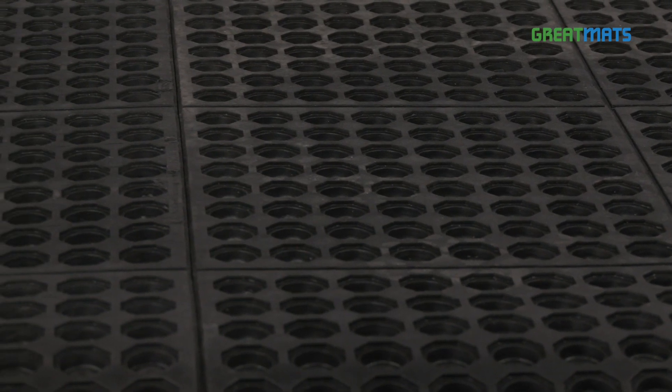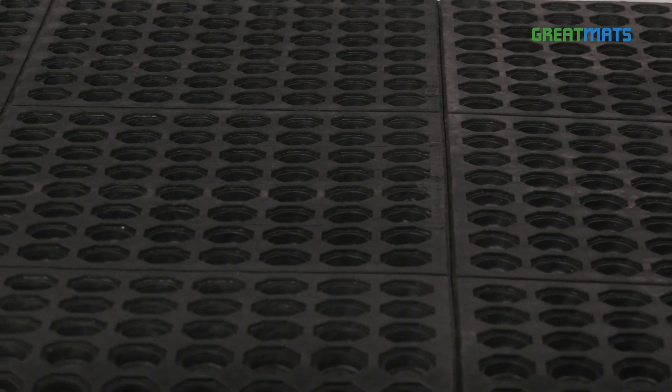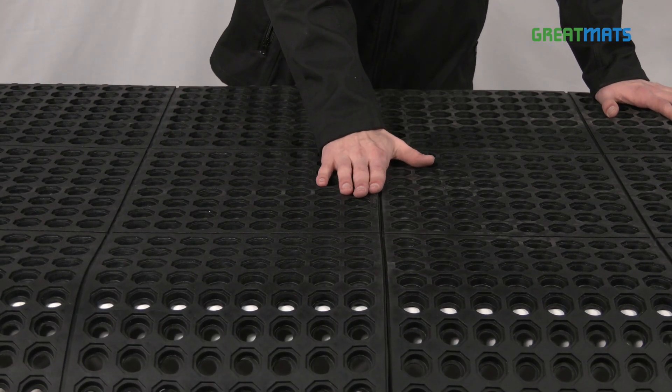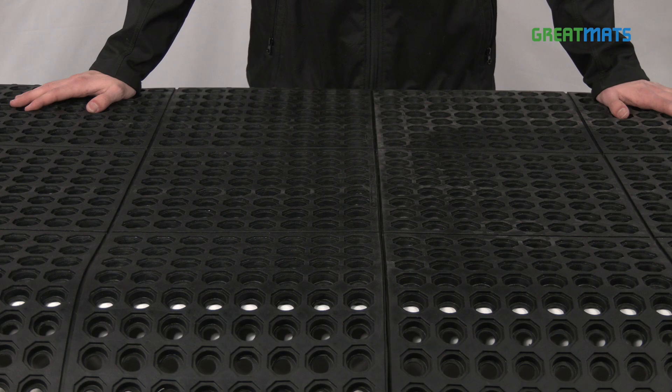This mat is 3 feet by 3 feet in size and 5 eighths of an inch thick. This mat's hidden dry lay interlocking system makes it great for large flooring areas and for single workstations.